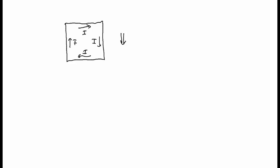I'd like to ask what would the force on a square loop of wire look like? Here's my square loop — a loop of wire — and I'm going to say that the current is going clockwise. Suppose I put this loop in a magnetic field which points downward. We'll say that this loop has height H and width W.